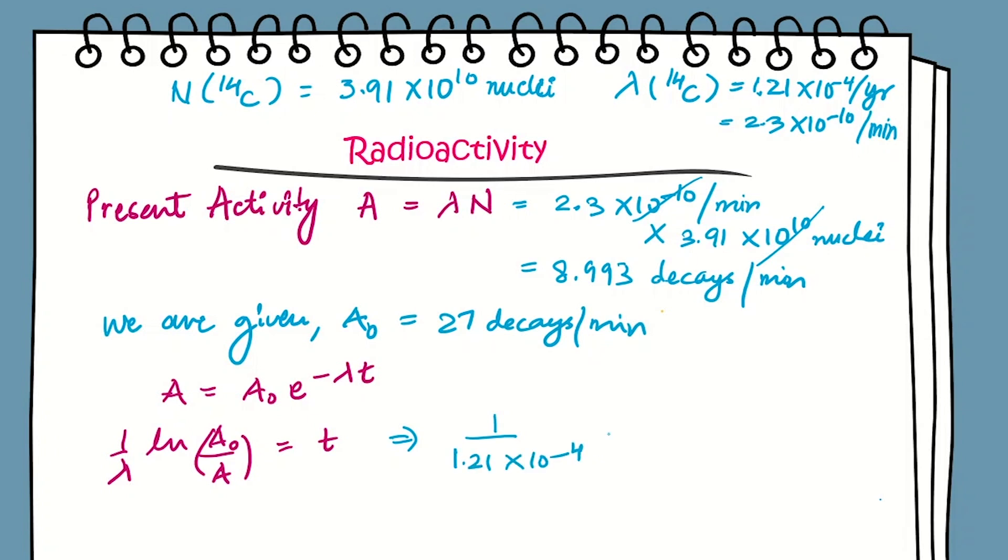We will use λ in terms of years, which is 1.21 × 10^-4. The activities are 27 and 8.993, so the ratio is approximately 3. We can write this as ln3 divided by 1.21 × 10^-4. Calculating this we get 9079.4 years, which is the answer for this question.